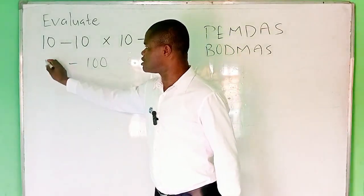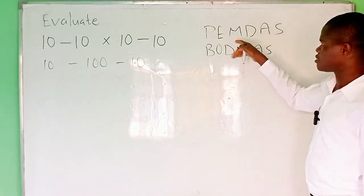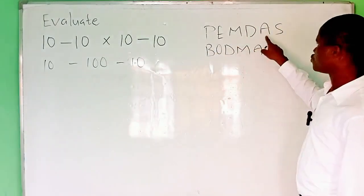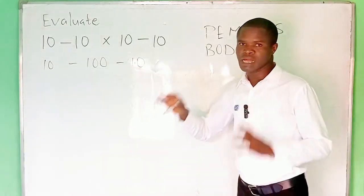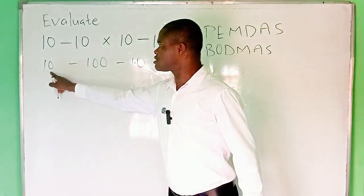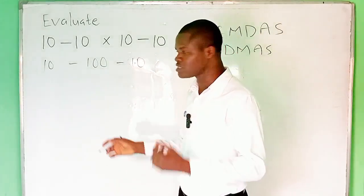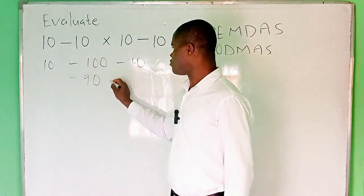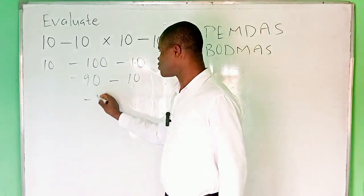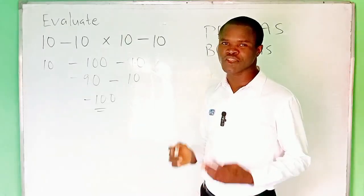So this is minus 100. There was 10 here — bring it down. And there is minus 10 here — bring it down. We go back to our PEMDAS. We are done with multiplication. The next is division — is there division here? No. The next is addition — is there addition here? No. We go to subtraction. So we subtract them two by two: 10 minus 100 gives us minus 90. Then minus 90 minus 10 gives us minus 100.